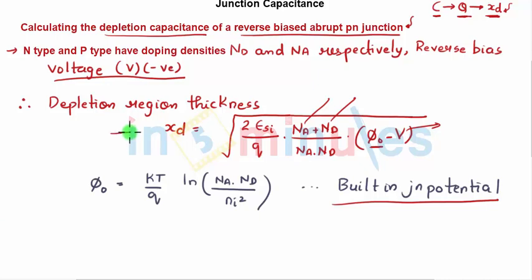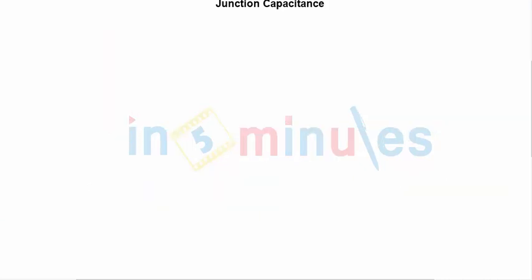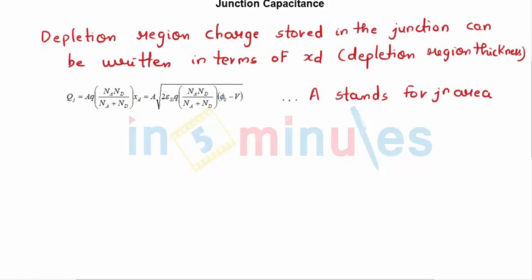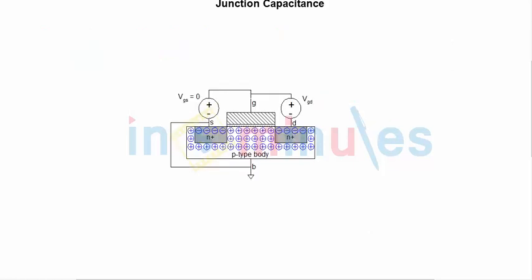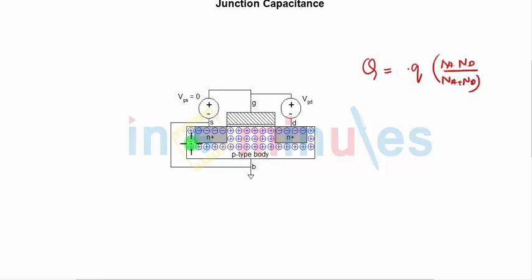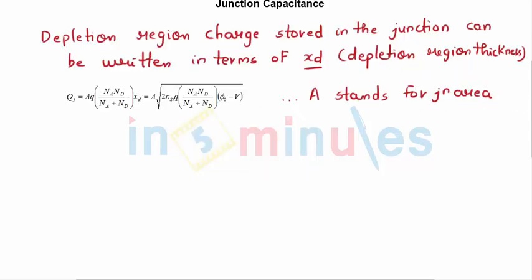With the depletion region thickness known, we next find the total depletion region charge QJ. The depletion region charge is expressed in terms of the depletion region thickness: QJ = Q × (NA × ND)/(NA + ND) × A × XD, where A is the junction area, Q is the electron charge, and XD is the depletion region thickness. Area times thickness gives the total volume where charge is present.